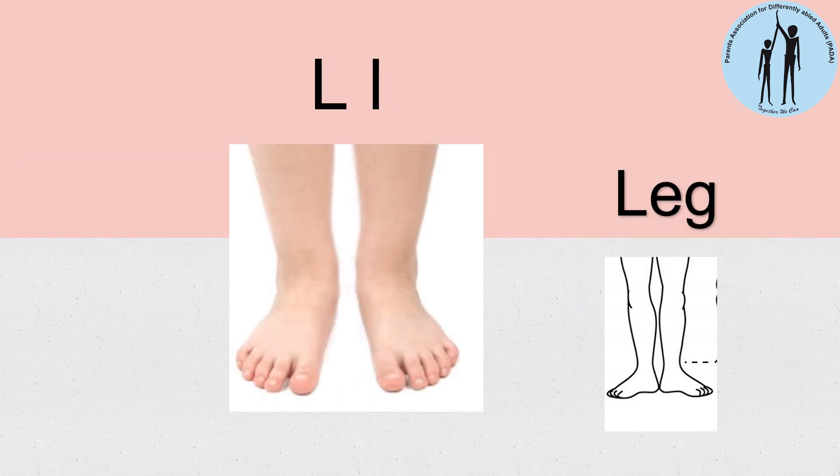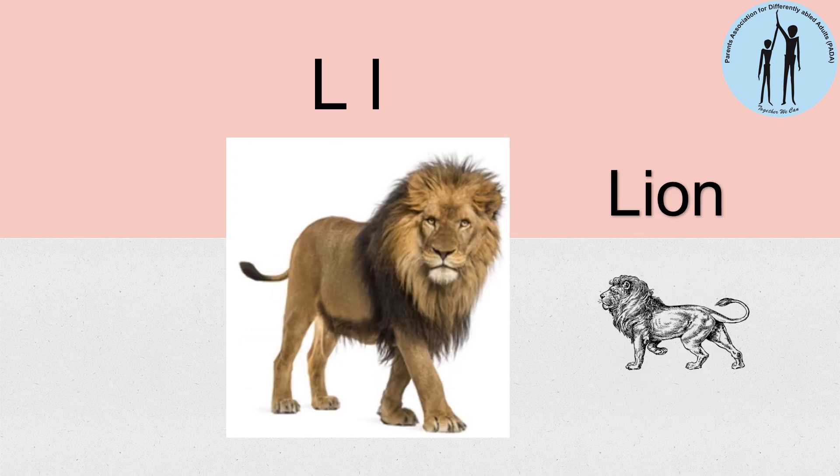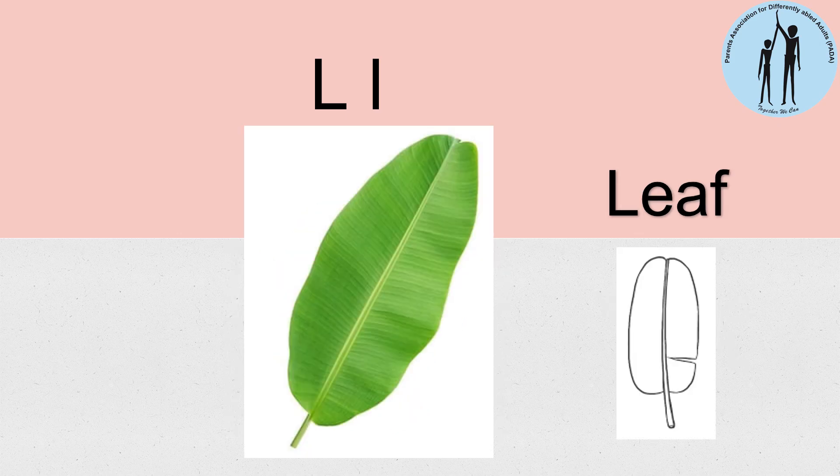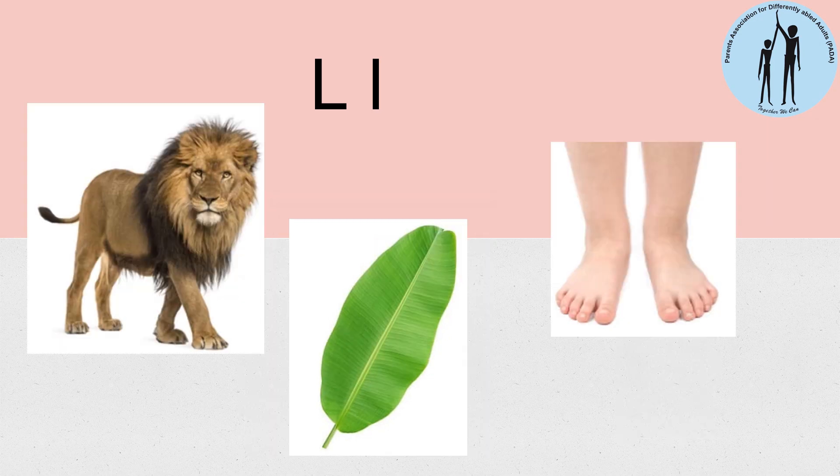Next alphabet is L. L for leg. L for lion. L for leaf. Let's say the words for each picture.